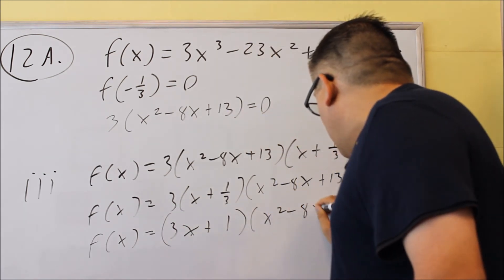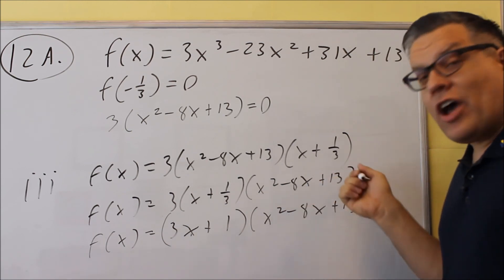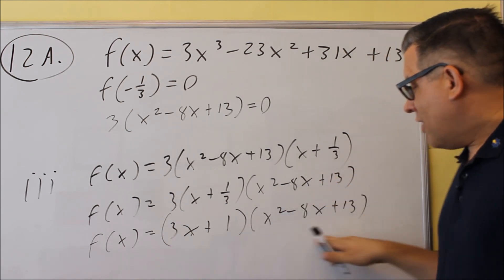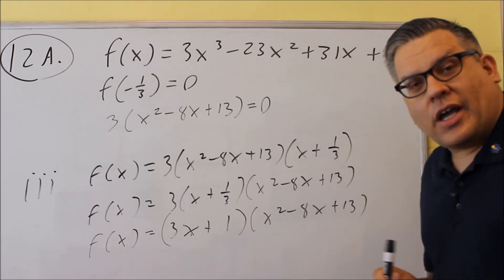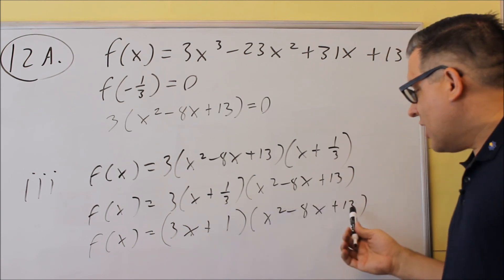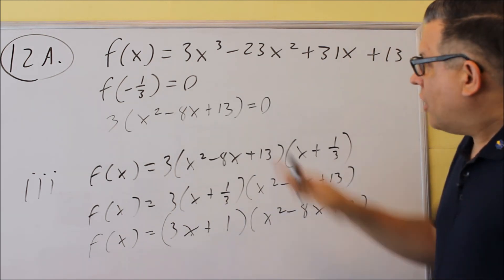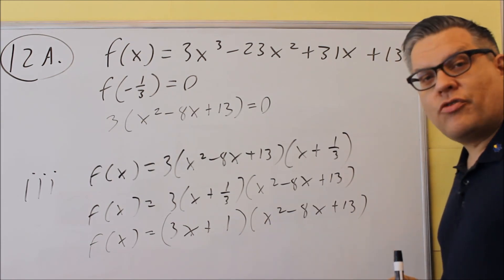But I still have this part left, and then this part I can't factor anymore, so then I would get this. This would be fully factored. I can always see if my answer is correct by multiplying it back through, and if we were to foil this out all the way, we would get this one, the original one that we started with, so this answer here, this would be fully factored.